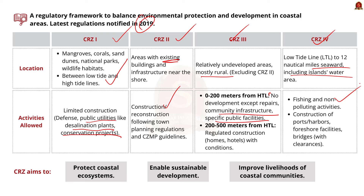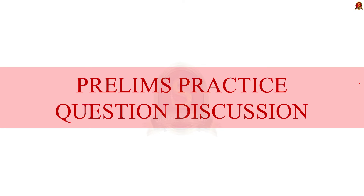CRZ4 applies to the water area from the low tide line to 12 nautical miles seaward, including water area around islands. Here, fishing and other non-polluting activities are permitted, and construction of ports, harbors, foreshore facilities, and bridges is allowed with appropriate clearances. CRZ aims to protect India's coastal ecosystem while allowing sustainable development and improving the livelihood of coastal communities.